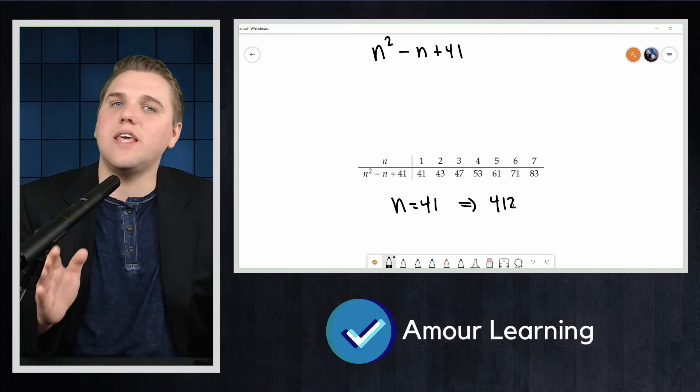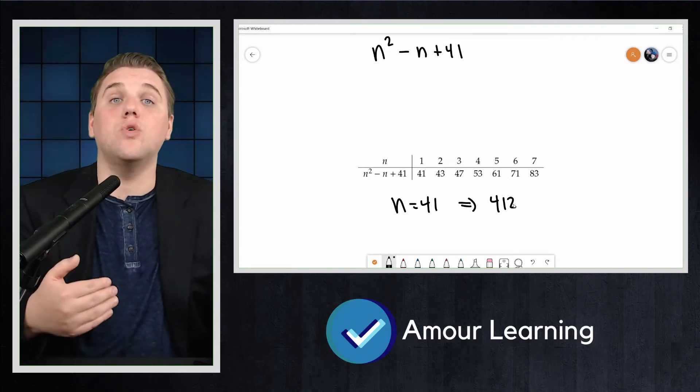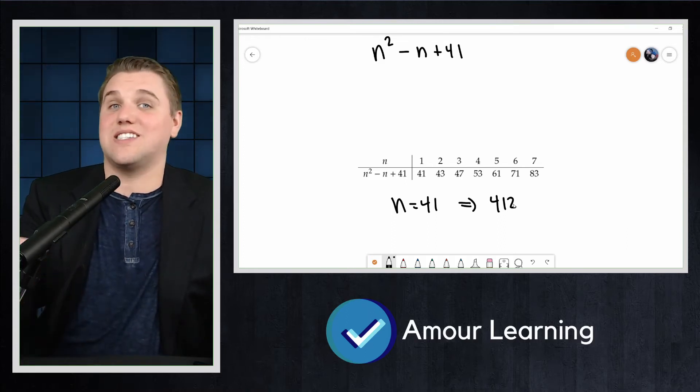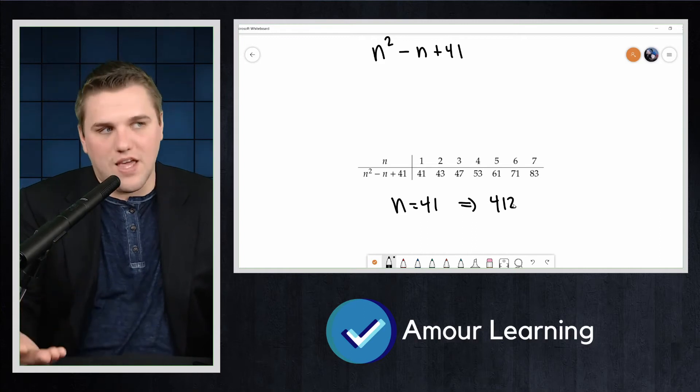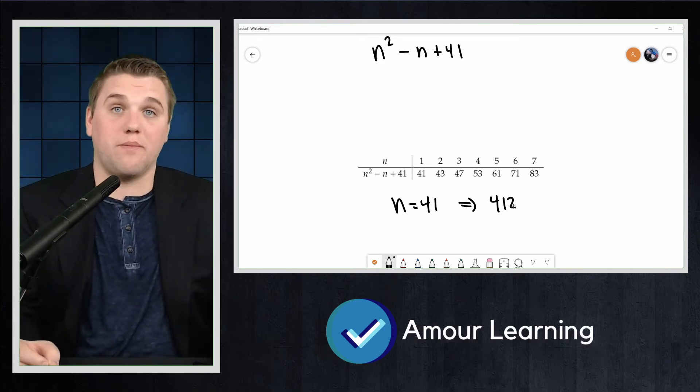Since so many statements in mathematics are universal, making their negations existential, we can often prove that a statement is false, if it is, by providing a counterexample.